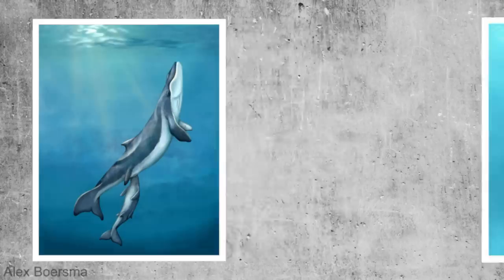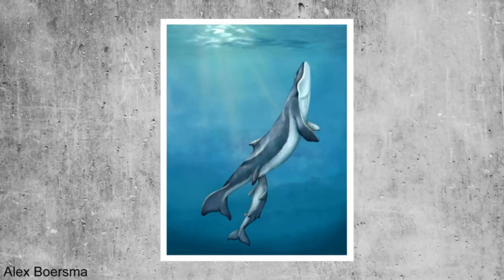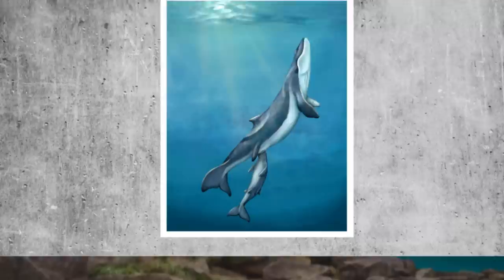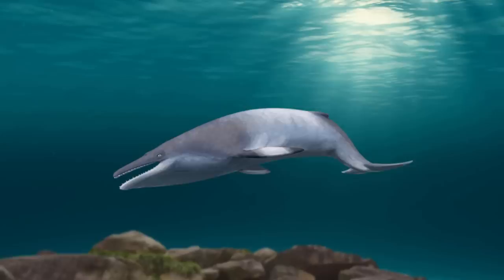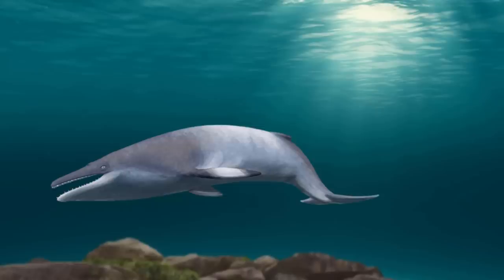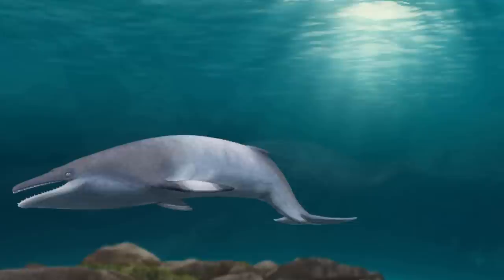Another whale, called Maiabalaena, was completely toothless yet didn't have baleen either. It had strong cheeks, so it most likely fed by sucking in tiny prey that it did not need to chew, probably not too dissimilar to modern whales. So during the late Eocene, baleen whales had many different methods of catching prey, but they would eventually homogenize over one feeding method: filter feeding. It is thought that toothless whales like Maiabalaena were the transition to eventually developing baleen, meaning baleen whales went through a period of having no teeth before adapting baleen slightly over 20 million years ago during the Miocene.